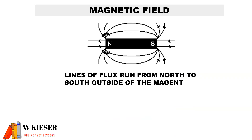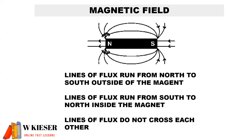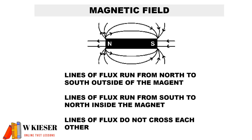For the magnetic field, we find that lines of flux run from north to south outside of the magnet, and lines of flux run from south to north inside the magnet. We also find that lines of flux do not cross each other and they also run parallel to one another.